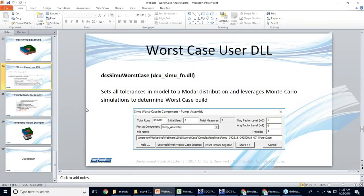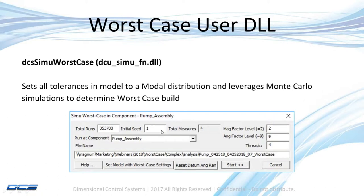We also have a worst-case user DLL. This DLL sets all our tolerances in the model to a modal distribution and leverages Monte Carlo simulations to determine the worst-case build.